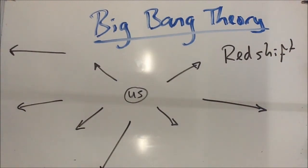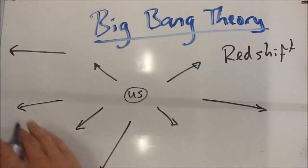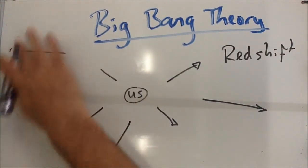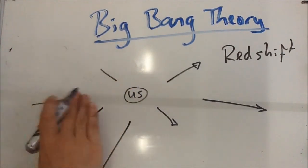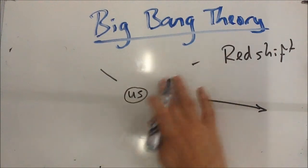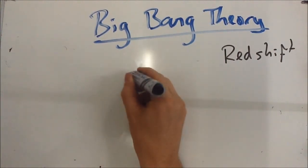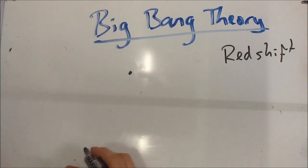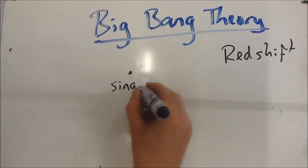Now, if they're all moving away from us, then yesterday all these objects were a little bit closer. And the day before, they were even closer. And if we go back in time, then these objects were even closer. So if we continue back about 15 billion years, these objects were so close that actually they all existed in one single tiny little thing called a singularity.